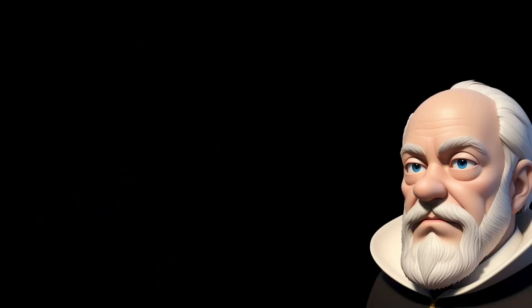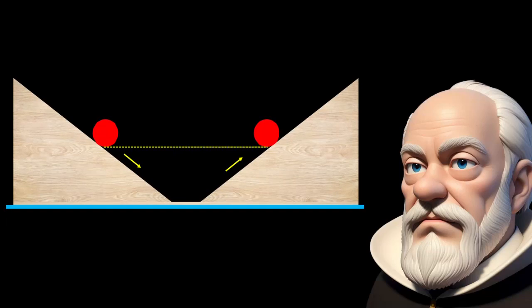Galileo conducted another experiment involving a double inclined plane. A ball released from rest on one of the planes rolls down and climbs up the other. In the ideal situation, with no friction, the final height of the ball is the same as its initial height.